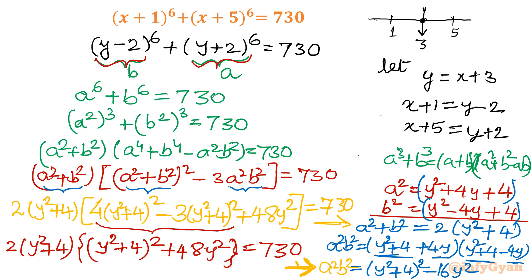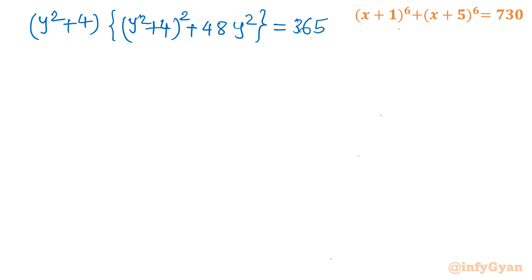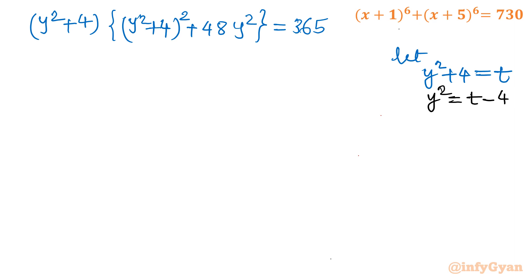Dividing both sides by 2: (y²+4) times [(y²+4)² + 48y²] = 365. Now let t = y²+4, so y² = t−4. Substituting: t times [t² + 48(t−4)] = 365.